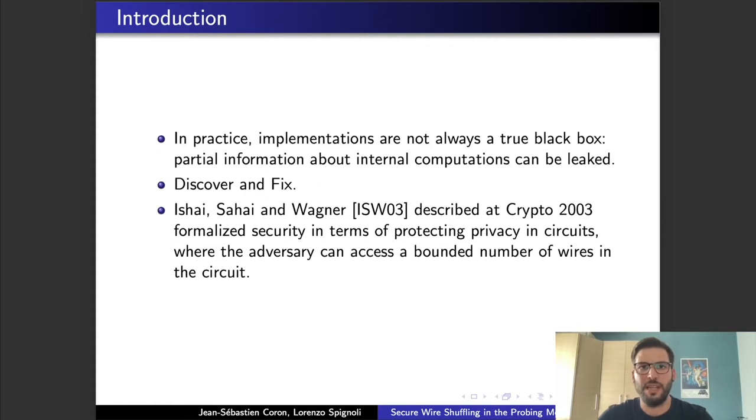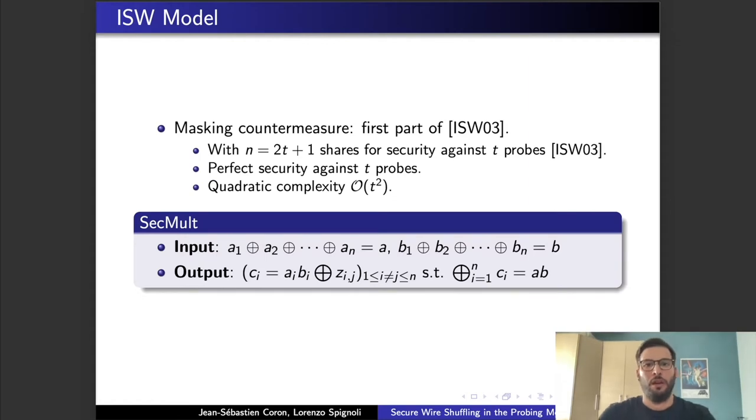Soundness guarantees that C and C' will have the same input-output functionalities, while the privacy states that the view of every adversary probing at most T wires in the circuit can be simulated from scratch.